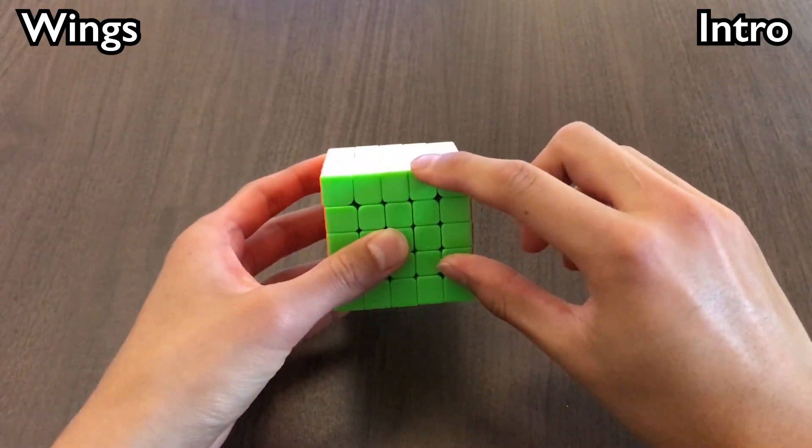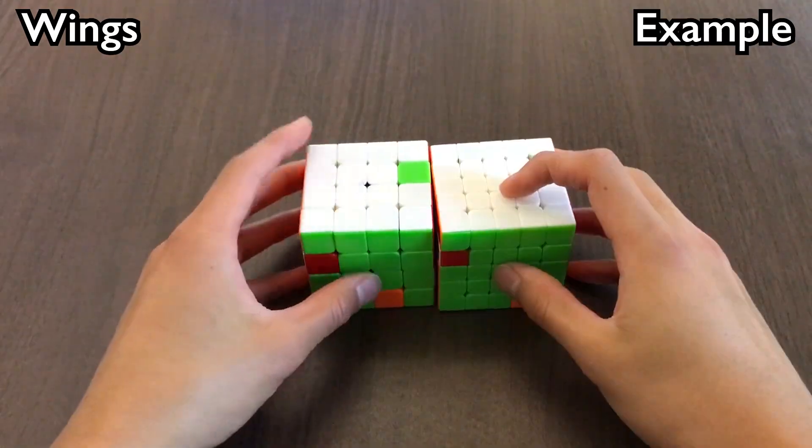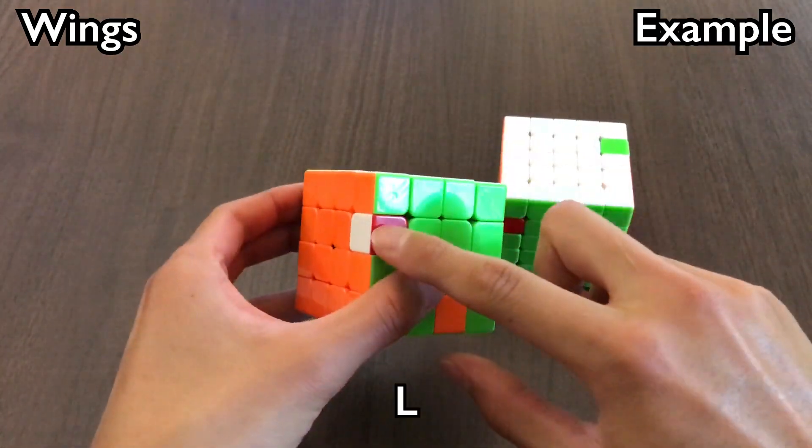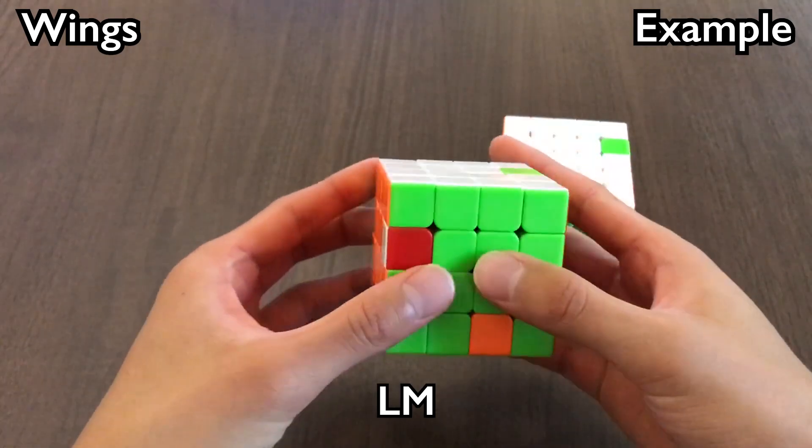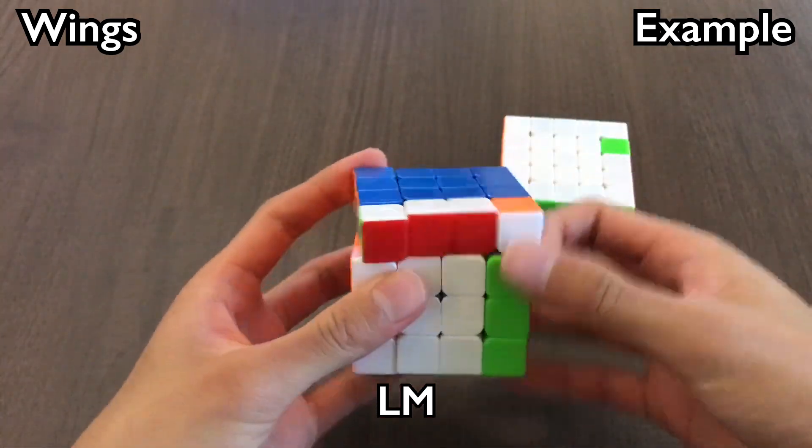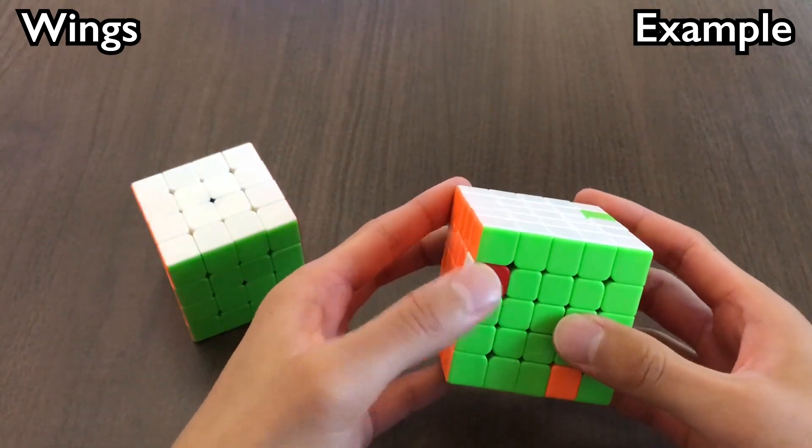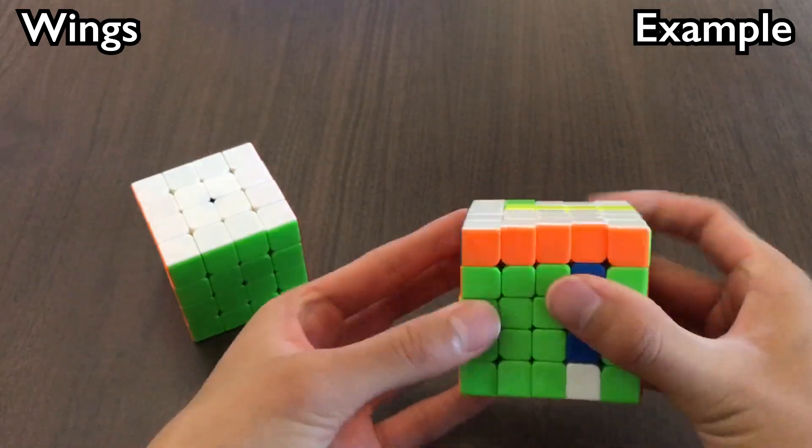We can solve wings with R2 in the exact same way as on 4-blind, so you don't want to learn anything new. For example, if we need to solve L and then M, we can do this and then that. On a 5x5, it's the exact same. L, M.